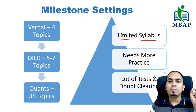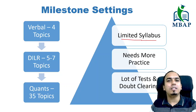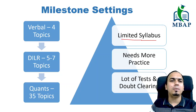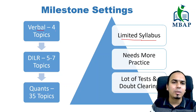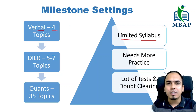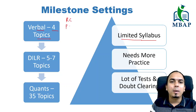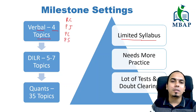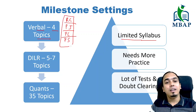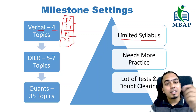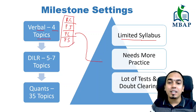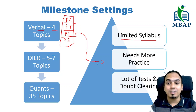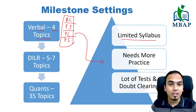CAT syllabus is a very limited syllabus. Understand the overall aspect — CAT has a very limited syllabus. What is Verbal? It is only 4 topics: Reading Comprehension, Para-jumble, Para-completion, and Para-summary. These are the 4 types of questions. But you need a good amount of practice for that.